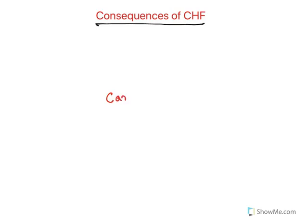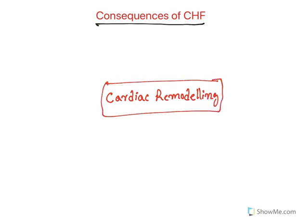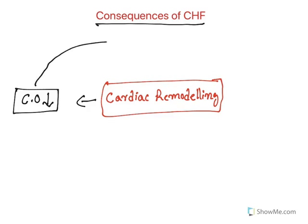Let us see the consequences of congestive heart failure. The major consequence is cardiac remodeling, as just explained. With cardiac remodeling, the major change is that the heart loses its ability to contract, or the heart failure condition is aggravated, resulting in reduced cardiac output. The major function of the heart is to pump blood — cardiac output. This cardiac output is reduced in congestive heart failure, resulting in reduction in blood pressure as well as reduced perfusion — the blood circulation to a particular tissue.